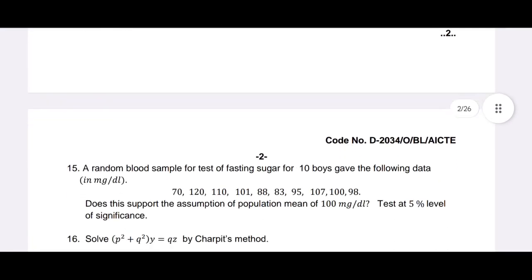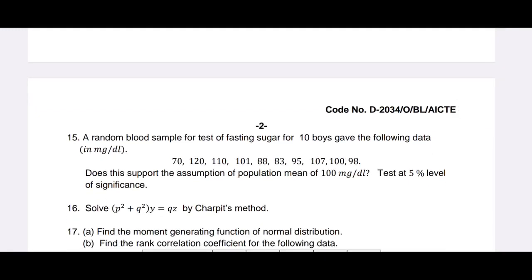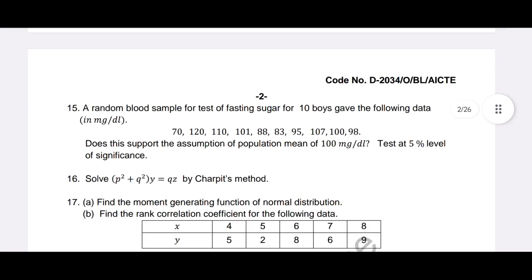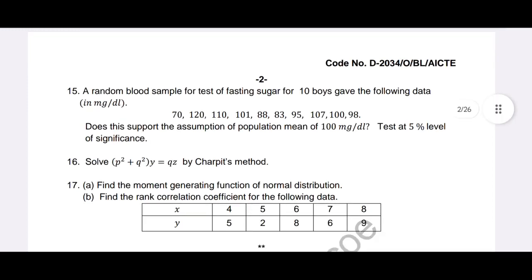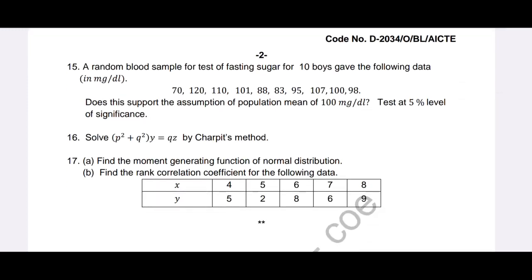Question 15a is on testing of hypothesis where the sample size is 10 — less than 30, so it is a small sample Student t-test. Question 16 is on the chart-pits method. Question 17a is again asking for the moment generating function of the normal distribution — practice mean, variance, and MGF of all five distributions; it is very very important. Question 17b asks to find the rank correlation coefficient of the following data.